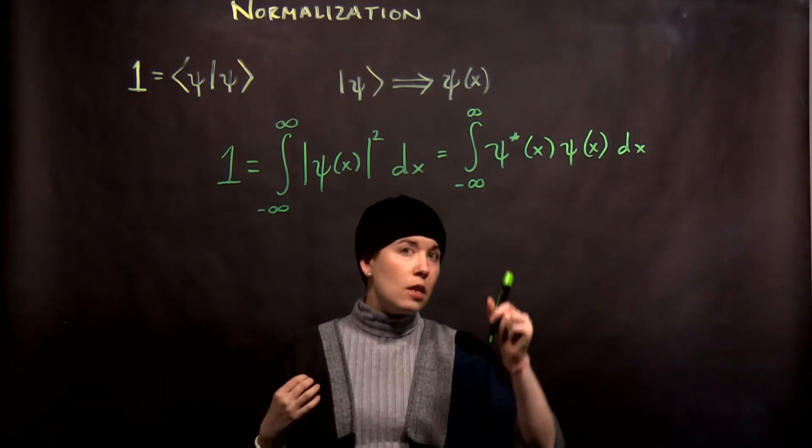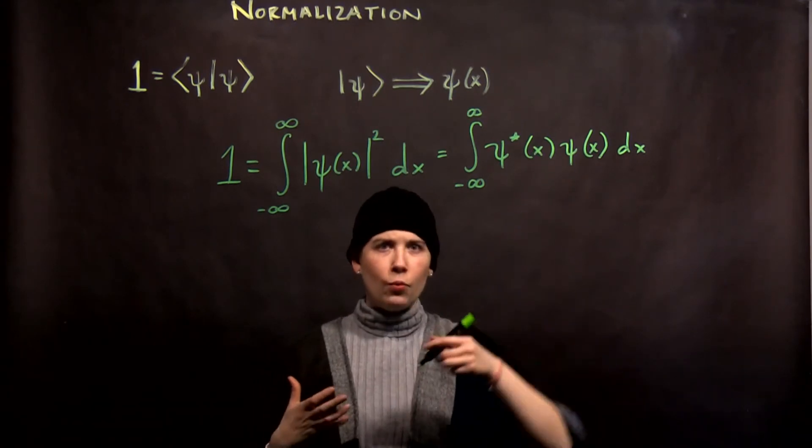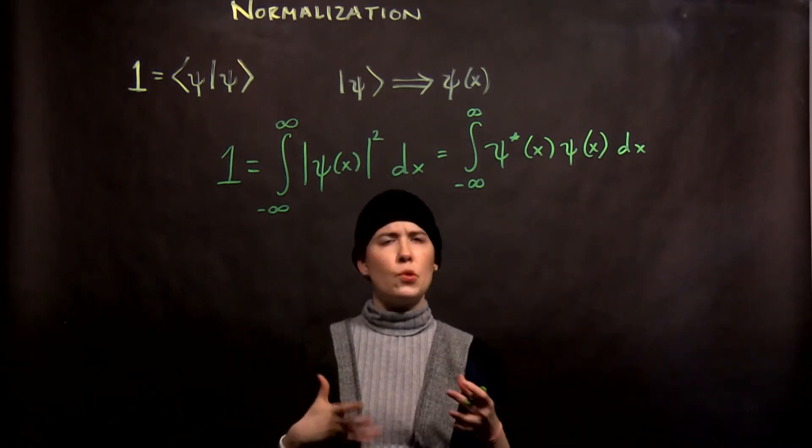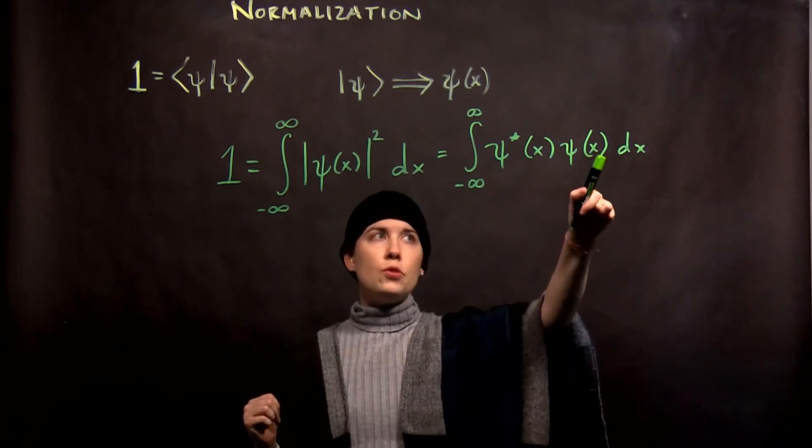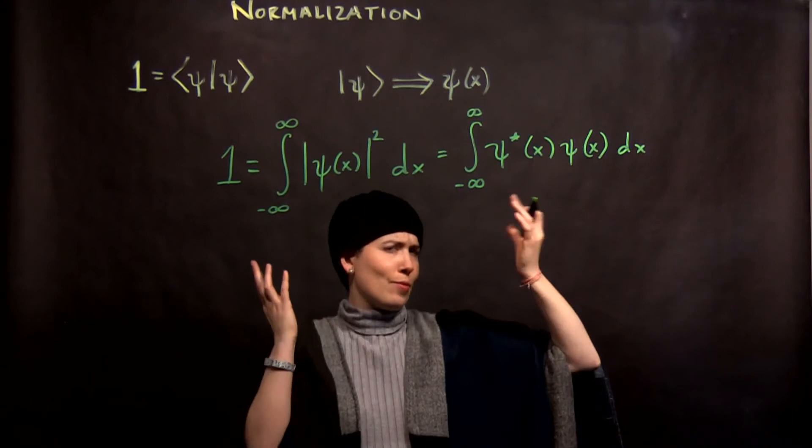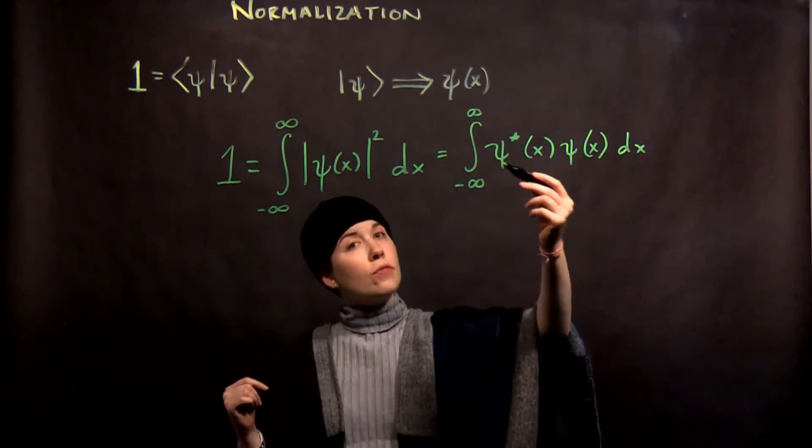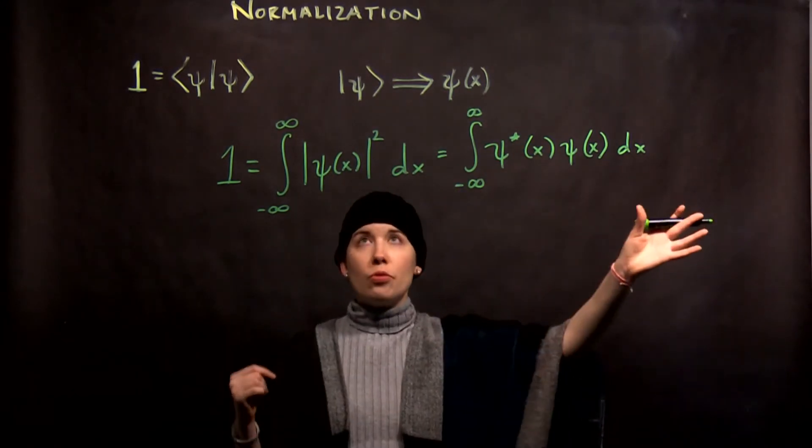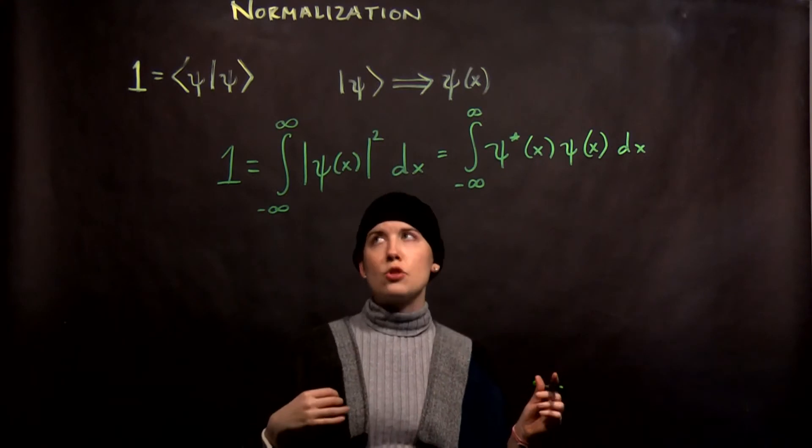Now notice that I didn't complex conjugate x. Well that's a position. So position is a real number. So you don't need to do anything with x. That's a position, like 1 centimeter, 2 miles. Not complex. But the wave function might be. So that's our normalization condition.